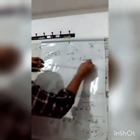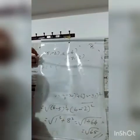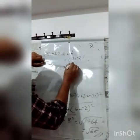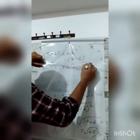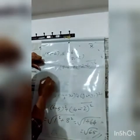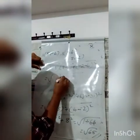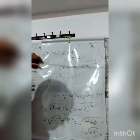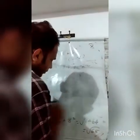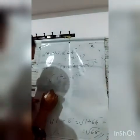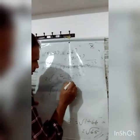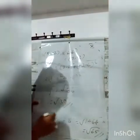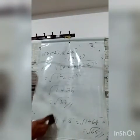Next, calculate BC. BC = root of (7 - 6) whole square plus (-2 - 4) whole square = root of 1 square plus (-6) whole square = root of 1 plus 36 = root 37 units.